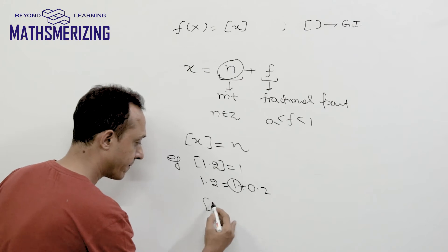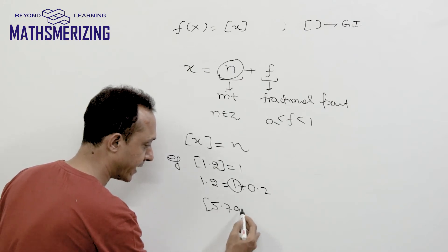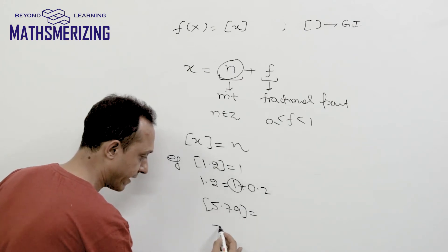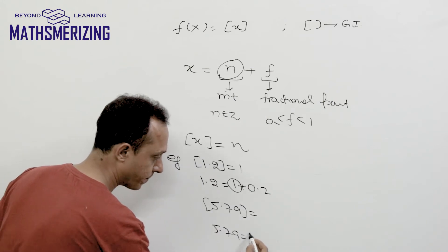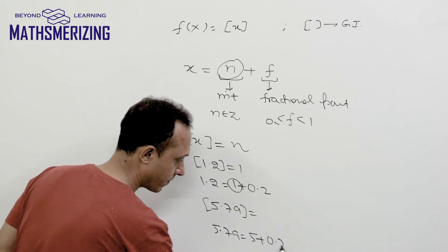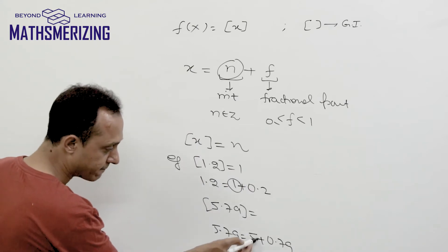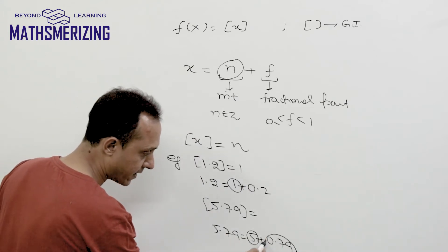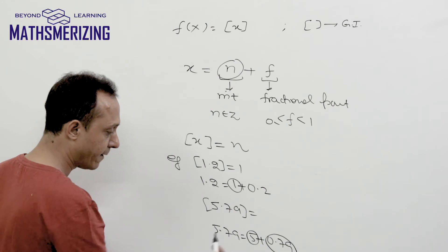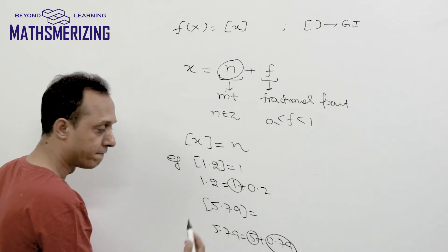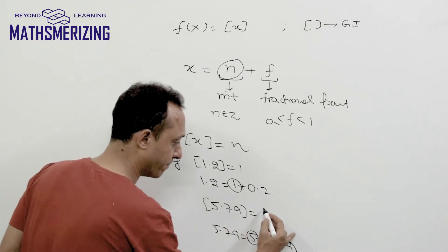Let's take another example, say 5.79. I can write 5.79 as 5 plus 0.79. So its integral part is 5 and its decimal part is 0.79. Therefore, the value of the greatest integer function of 5.79 is simply 5.